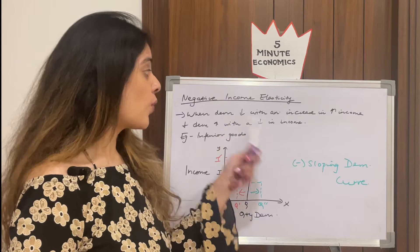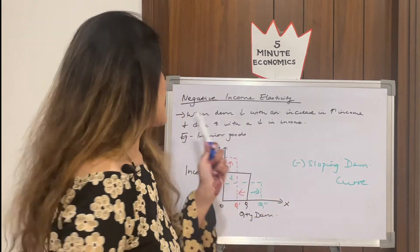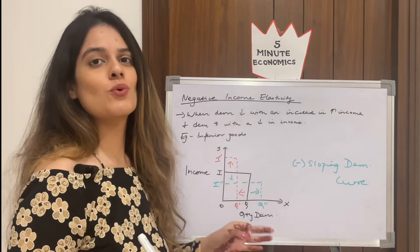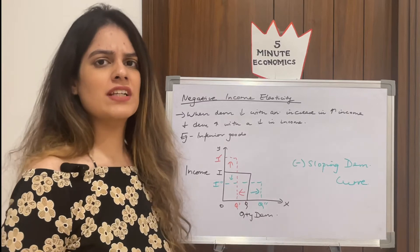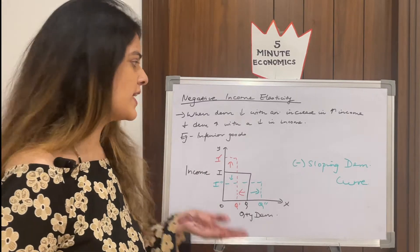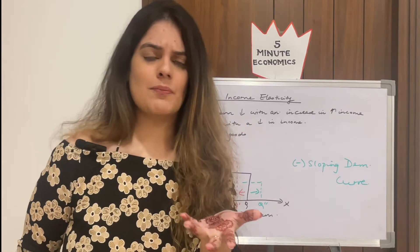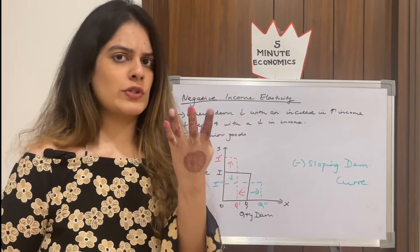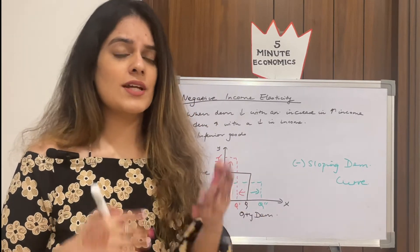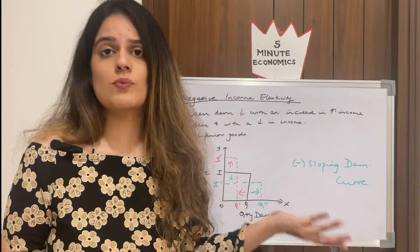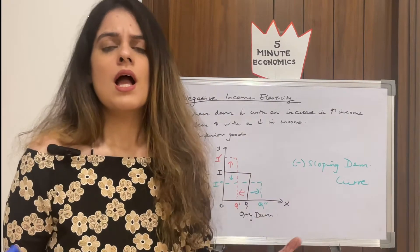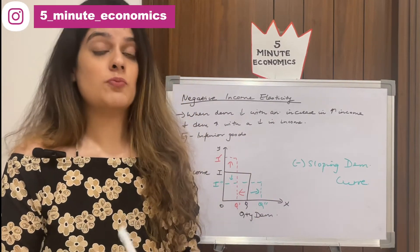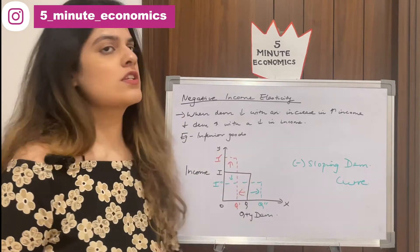In negative income elasticity, demand falls with an increase in income, and demand rises with a fall in income. You might wonder when this happens — we normally think that as income increases, consumption increases. But in the case of inferior goods, we move in the opposite direction.